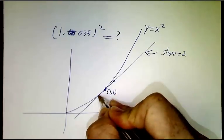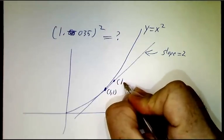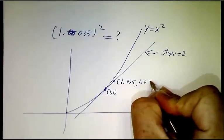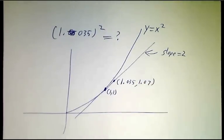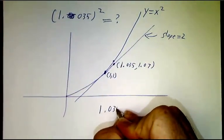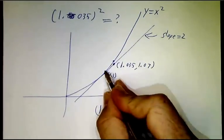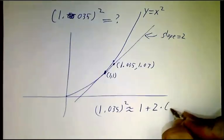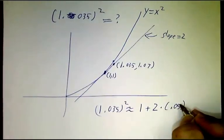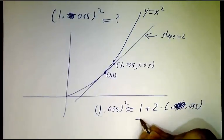And the straight line is hugging the curve really closely. So on the straight line we'd go through the point (1.035, 1.07). And so we know that that's a very good approximation to 1.035 squared. So 1.035 squared is approximately where you started plus your slope times 0.035, and that's 1.07.